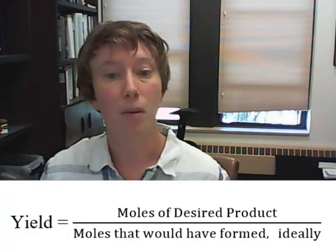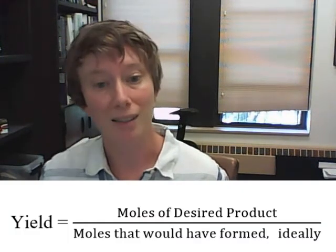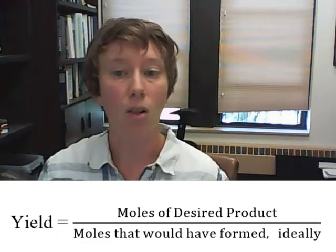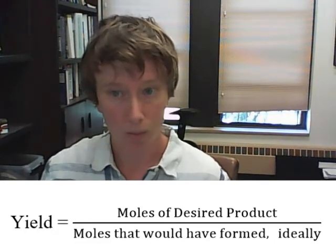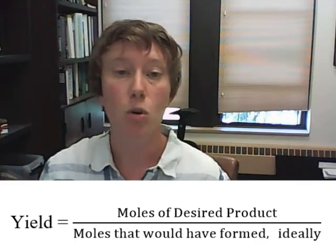Yield and selectivity are two other important concepts when we're looking at chemical reactions. In most situations, undesired chemical reactions are going to occur, so you normally don't have 100% of your desired product produced. Yield is the moles of desired product divided by the moles that would have formed ideally. Under these ideal conditions, all of the limiting reactant would react, and there would be no side reactions.